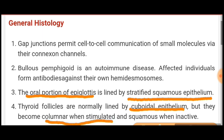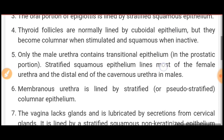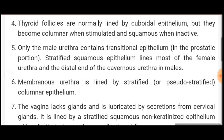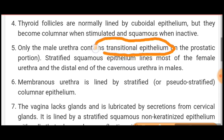Now the male urethra — only the prostatic portion of the male urethra contains transitional epithelium. You may traditionally read that the urethra contains transitional epithelium, but specifically it is the prostatic portion of the male urethra. Stratified squamous epithelium lines most of the female urethra and the distal end of the cavernous urethra in males, while the membranous urethra is lined by stratified columnar epithelium.